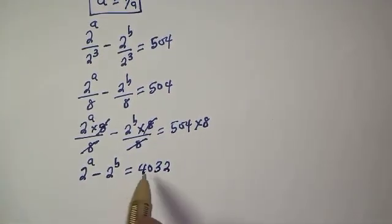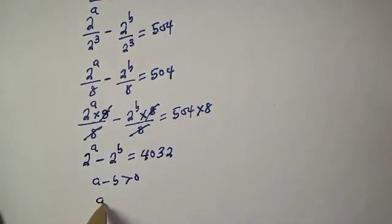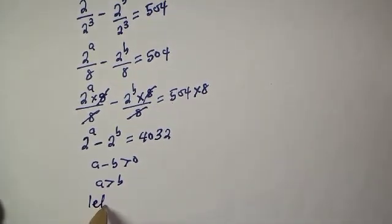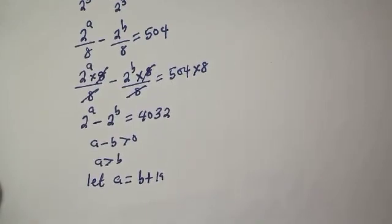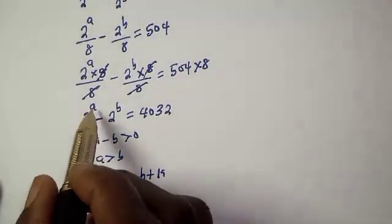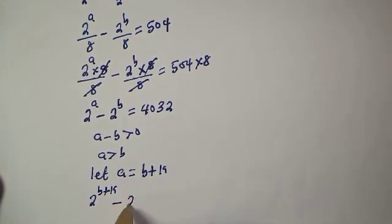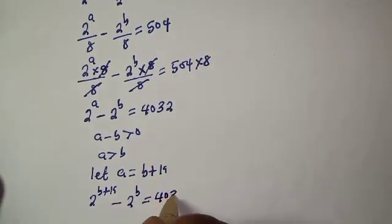From here, a minus b is greater than 0, so a is greater than b. Let's say a is equal to b plus k. If a equals b plus k, substituting for a we have 2 raised to power b plus k, minus 2 raised to power b, is equal to 4032.